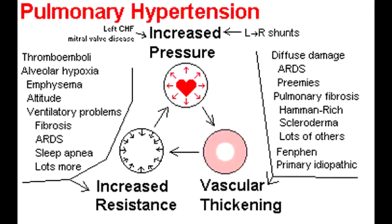Autoimmune diseases, such as systemic sclerosis, can also lead to pulmonary hypertension because there is inflammation in systemic sclerosis, which causes intimal fibrosis and medial hypertrophy. Sleep apnea and high altitude can also lead to pulmonary hypertension because there is continuous hypoxic vasoconstriction that occurs. Finally, left-to-right shunt can also lead to pulmonary hypertension because the left side of the heart will keep moving blood to the right side, causing a continuous increase in pressure in the right side of the heart.